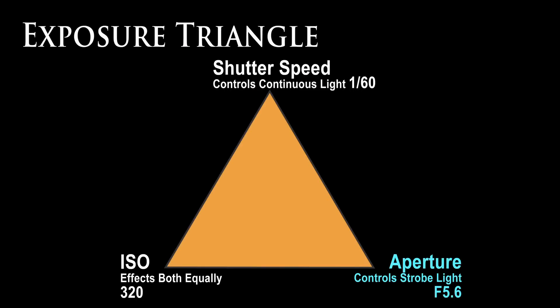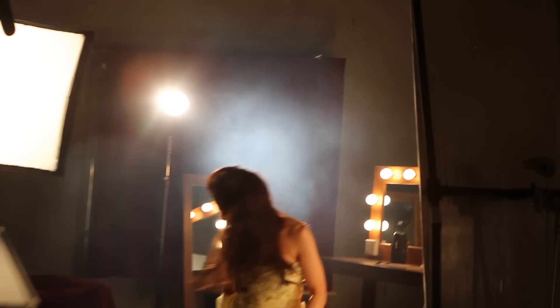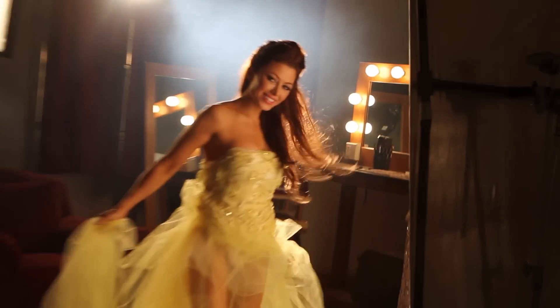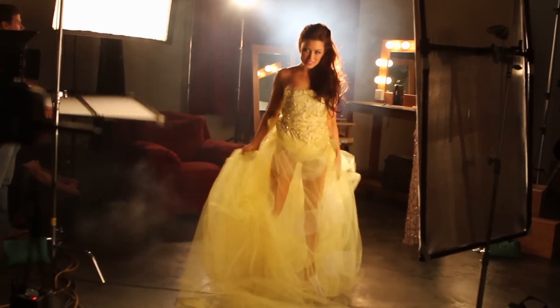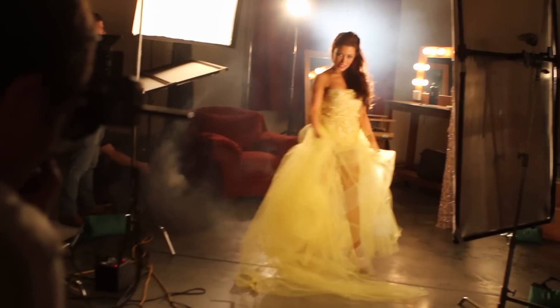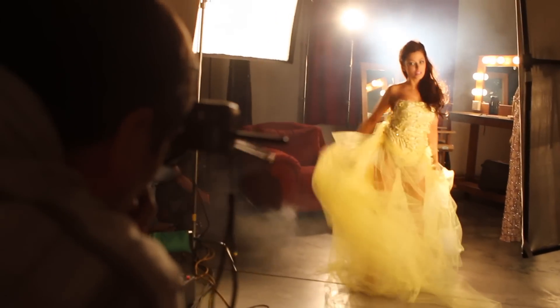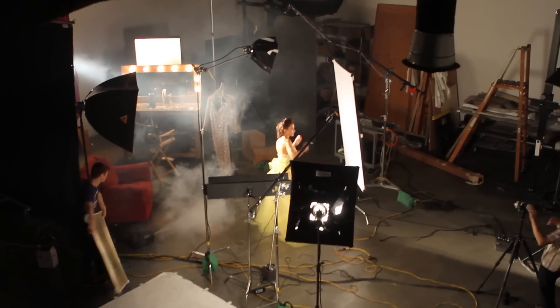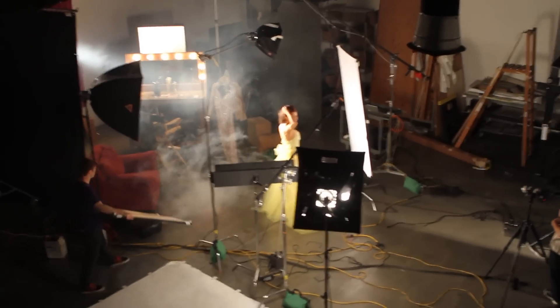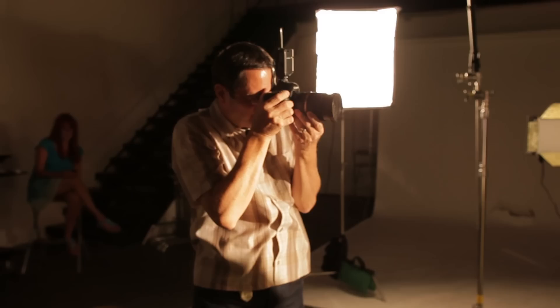Here's how I chose my aperture. I take a meter reading at the talent of the 2K and get F8. I want the 2K, the continuous light source, to be brighter in the shot, so I'm going to open up to F5.6. Aperture controls focus, and I'm happy that this will be fairly wide open so the background will be soft. The makeup mirror will read well at this exposure as well.